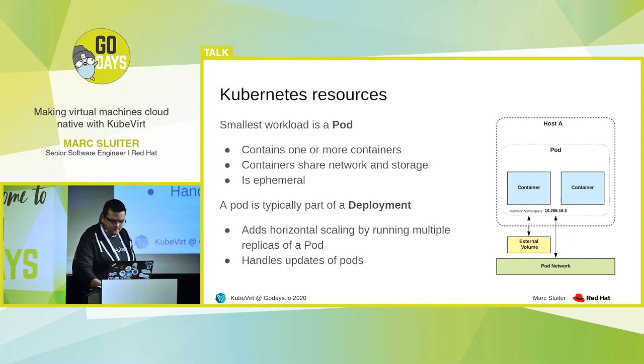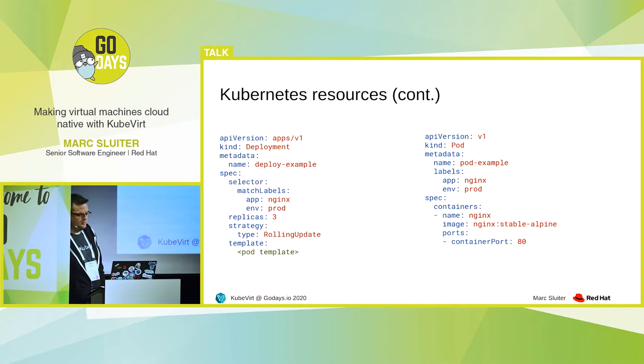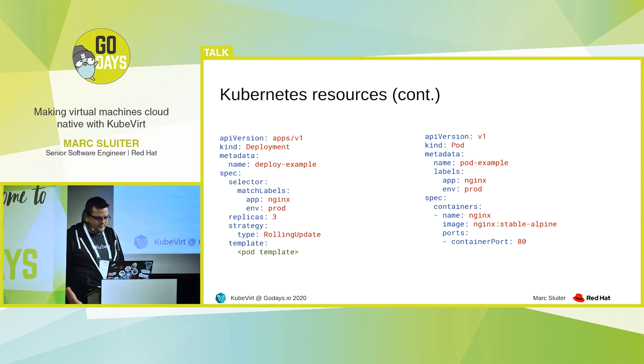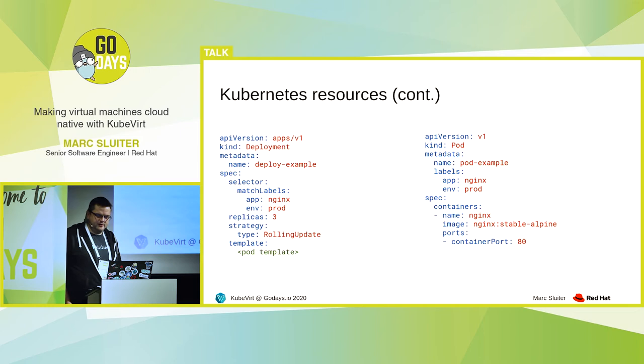Typically, you declare these pods and deployments using YAML files. On the left-hand side you see the deployment YAML. The important part here is replicas: 3 — that means you want to run three replicas of the same pod, and then Kubernetes does some kind of load balancing between them. You can also define update strategies. And then you have a template where the pod declaration comes in. The important part there is about the containers — here we just say we want to run one Nginx container and we are planning to open port 80.